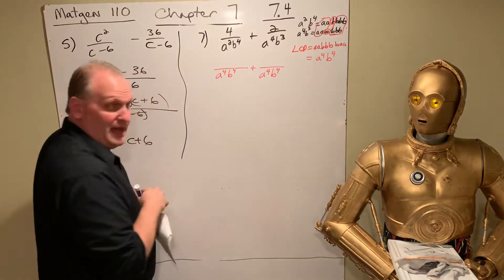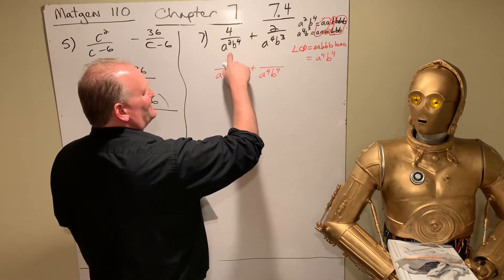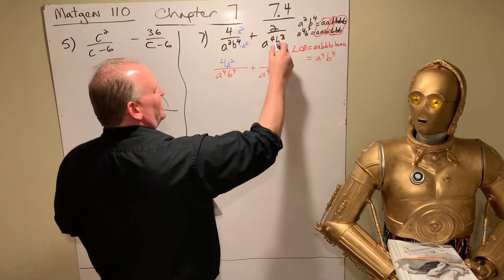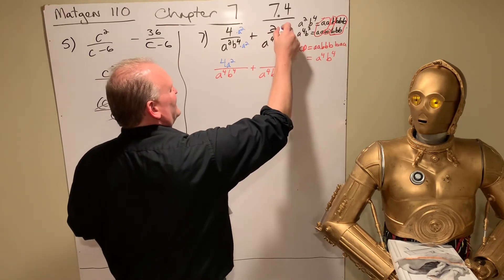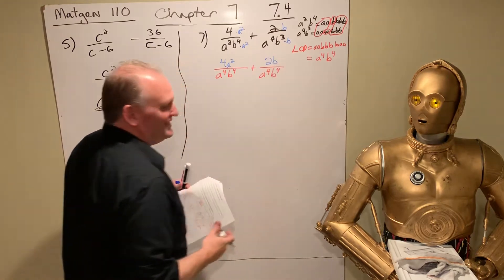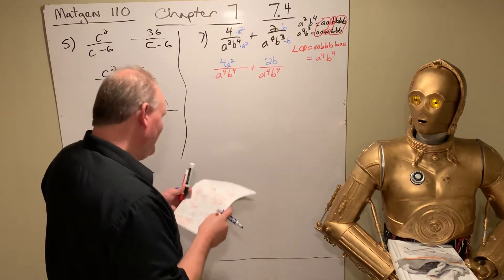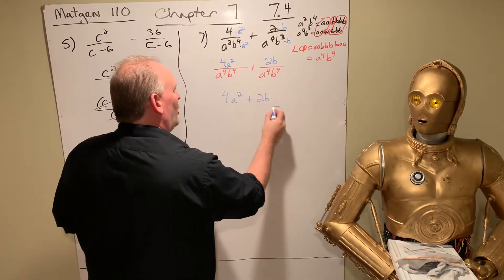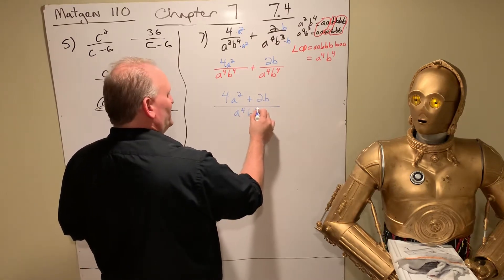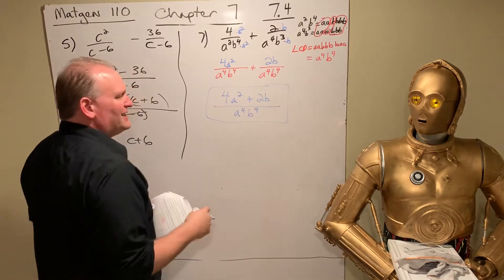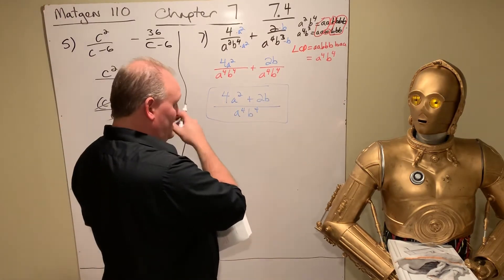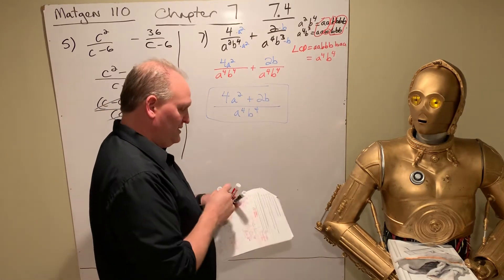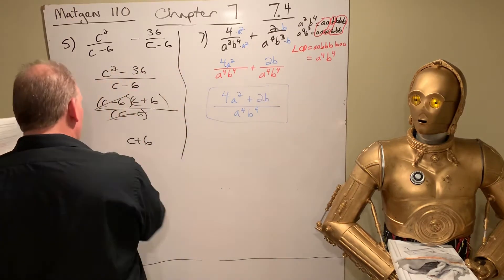And now we kind of work backwards on that. We're going to look at, what do I multiply this by to get that? That's an A squared, top and bottom. So 4A squared. What do we multiply that by? That's a B. 2B. And so this one looks like we didn't really accomplish much because we have 4A squared plus 2B over A to the 4th, B to the 4th. But we can't add those. We can't cancel anything. You could factor a 2 out if you really wanted to and write it 2 times 2A squared plus B. But there is no number to cancel it with. So you can just leave it like that.